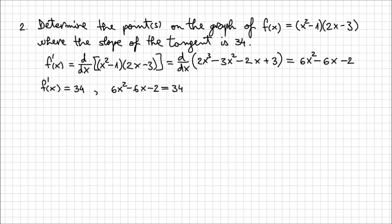So obviously, we're going to have to move everything on the left to make it equal to 0 to solve like any regular quadratic equation. So I'm going to write 6x² - 6x - 36, because I moved 34 on the left side. Everything equals 0. And this is just a quadratic equation.